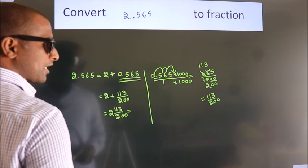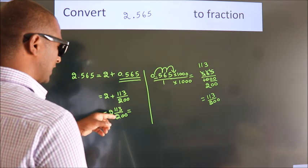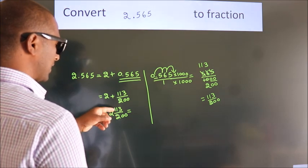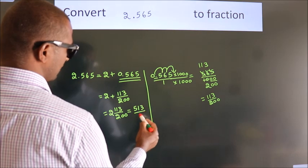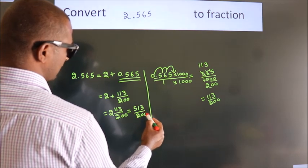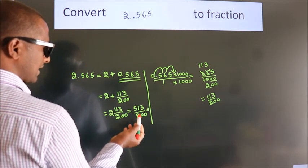And in improper fraction it is 2 times 200, 400 plus 113. 513 by 200 is our fraction.